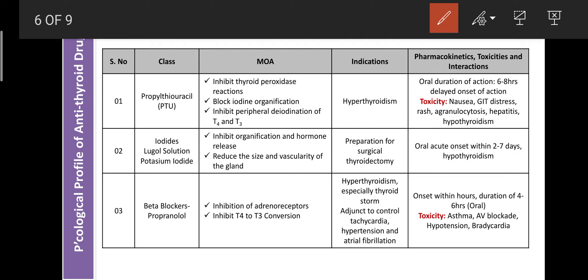Pharmacological profile of propylthiouracil (PTU): Mechanism — it inhibits thyroid peroxidase reactions, inhibiting the conversion of iodide into iodine; blocks iodine organification; and inhibits peripheral deiodination of T4 to T3. Therapeutic use — treatment of hyperthyroidism. Administered by oral route; action onset within 6 to 8 hours; food can delay onset. Toxicity includes nausea, GI distress, rash, agranulocytosis, hepatitis, and hyperthyroidism.